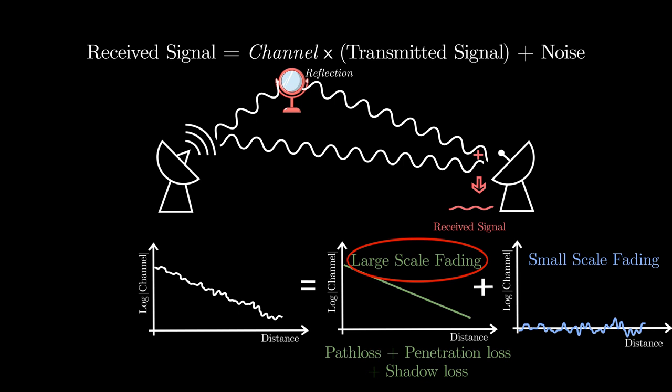Therefore, it varies only over a relatively large distance. On the other hand, the small-scale fading channel includes effects due to multipaths and movements of objects. Therefore, it fluctuates around zero over small distances.